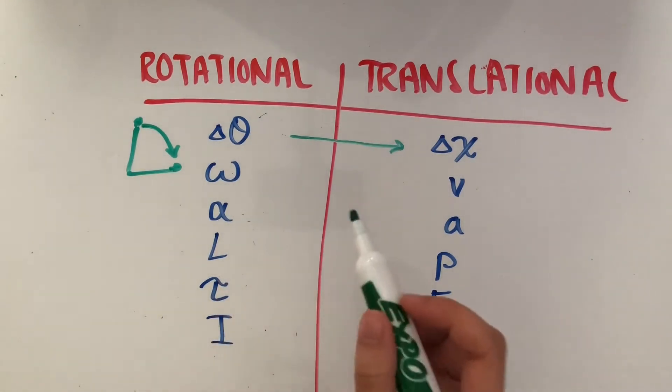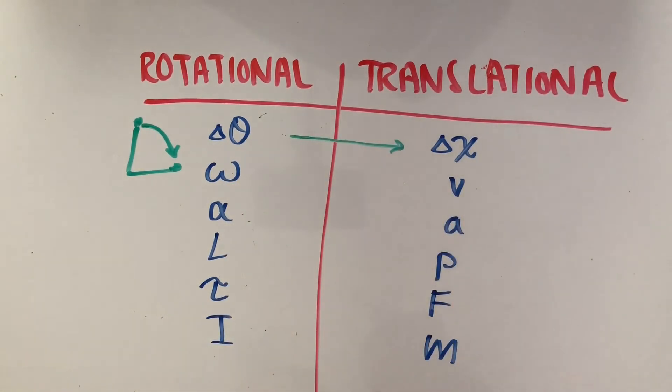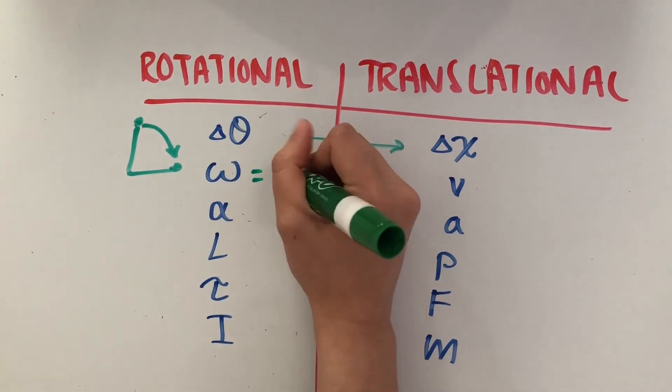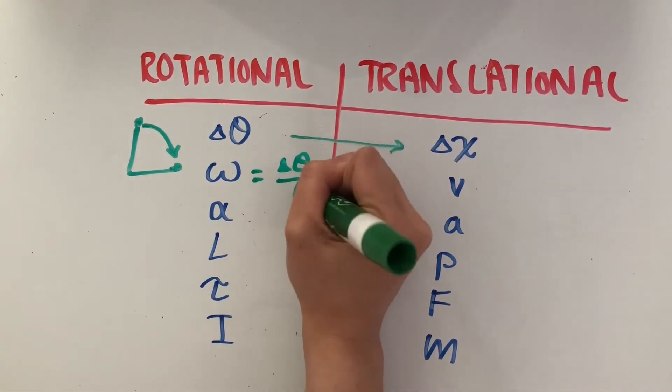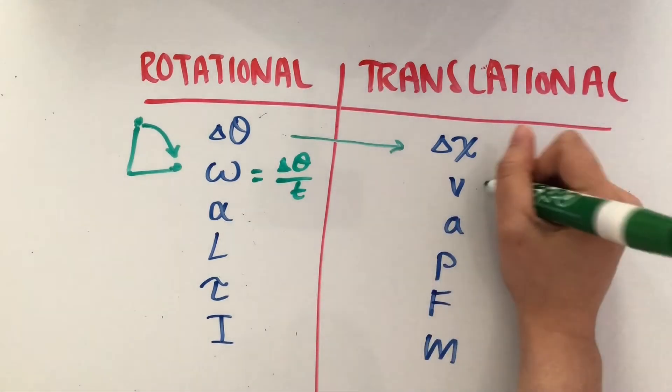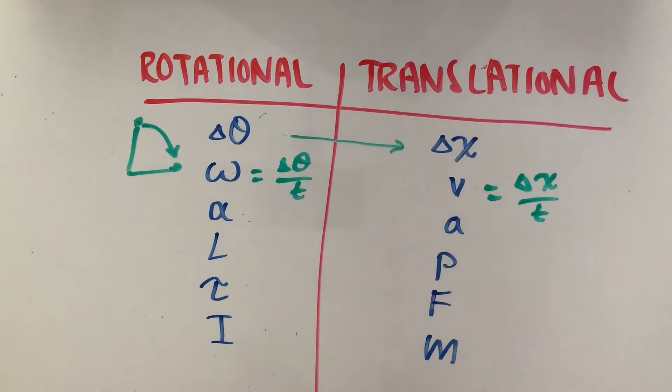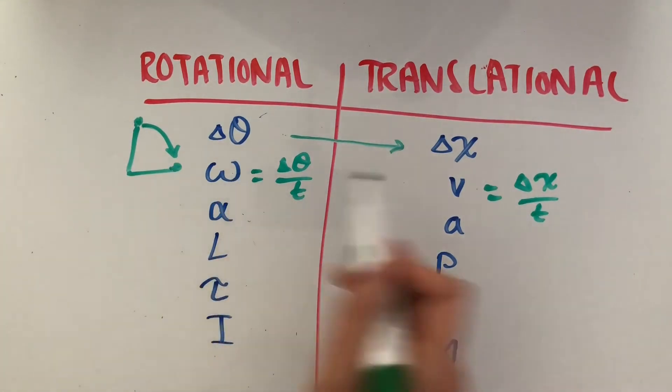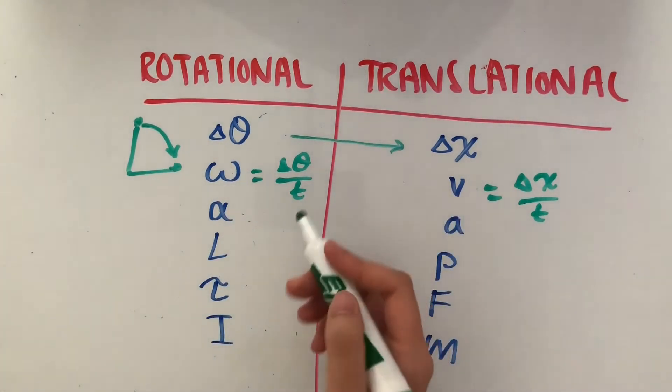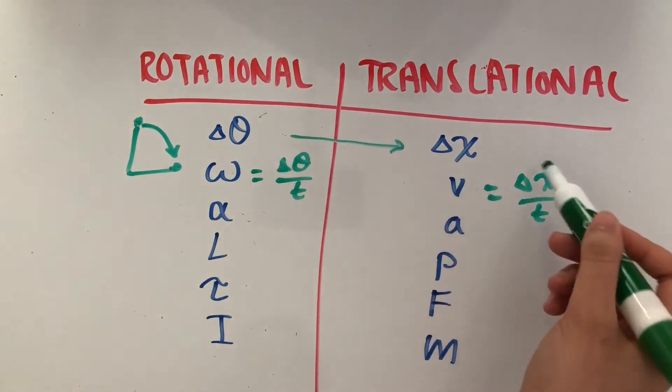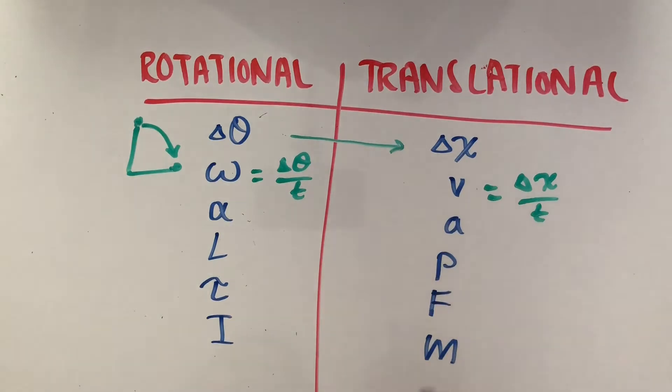Next up is our angular and translational velocities. Angular velocity ω is angular displacement over time. Similarly, velocity v is displacement over time. As you can see, both of these are very similar, except they're just using their corresponding displacements in the numerator divided by time.